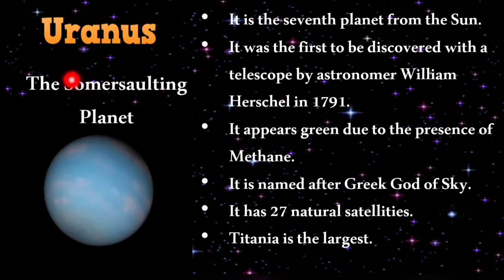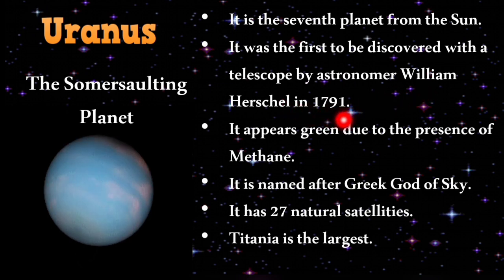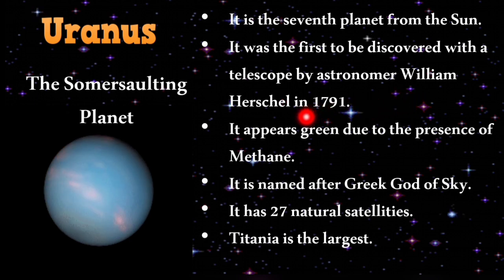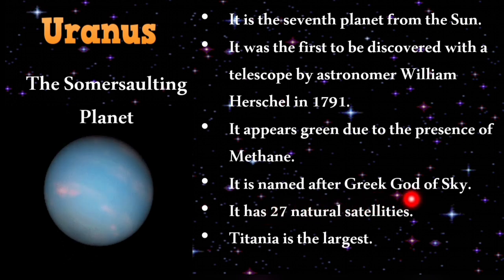Uranus is called the somersaulting planet. It is the seventh planet from the sun and was the first planet to be discovered with a telescope, by astronomer William Herschel in 1781. It appears green in color due to the presence of methane. Named after the Greek god of the sky, it has 27 natural satellites, of which Titania is the largest.